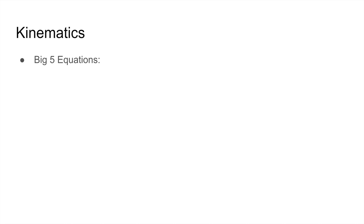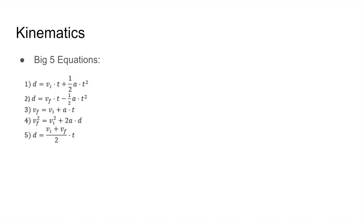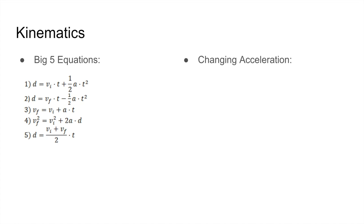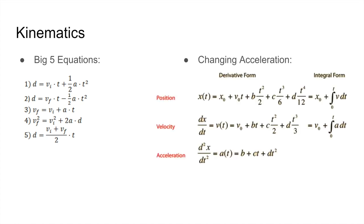Our next topic is kinematics. The most important part of kinematics are the big five equations. For each of these equations you should either memorize them or be able to derive them quickly. The big five equations describe how a particle moves under constant acceleration. Each equation is missing one variable, so if you're given three variables and want to find a fourth unknown, you can pick the equation missing the variable you don't care about and use it to solve for the fourth variable.